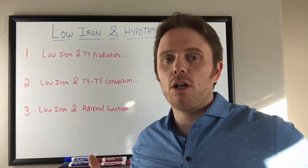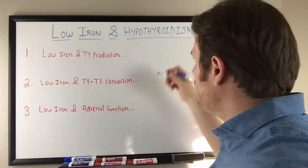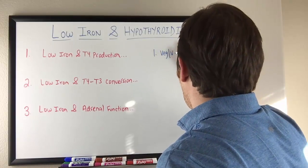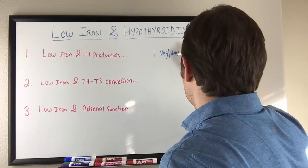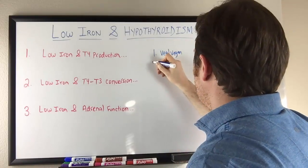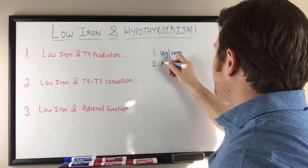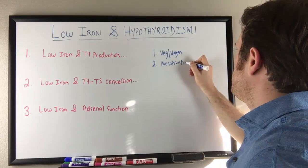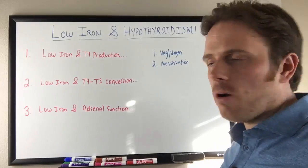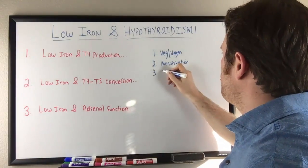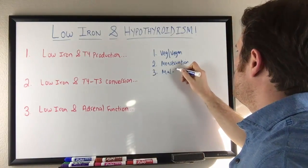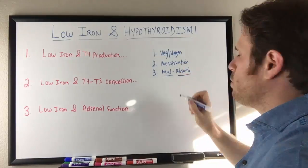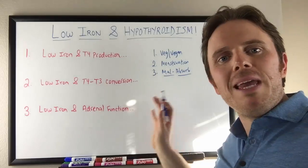So the big three things that are going to cause iron issues off the bat are going to be one, vegetarian slash vegan diets. I see it all the time. Number two is going to be excessive menstruation. And then number three is going to be malabsorption. That could be gluten sensitivity. That could be multiple gut infections. So those are going to be the big three causes.